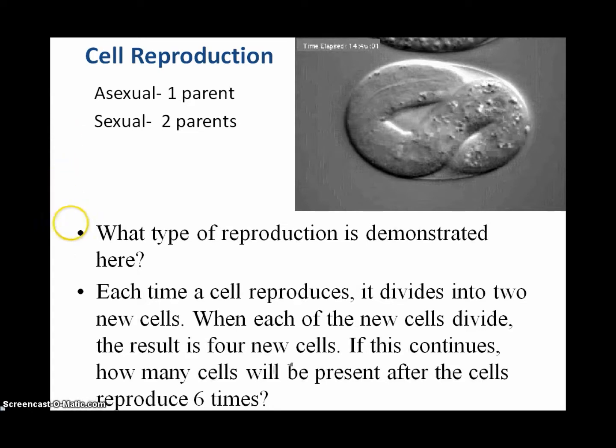So based on that, what type of reproduction was demonstrated in this video clip up above? And secondly, as cell reproduction continues from one cell to two cells to four cells, etc., calculate how many cells would be generated after six rounds of cell reproduction.